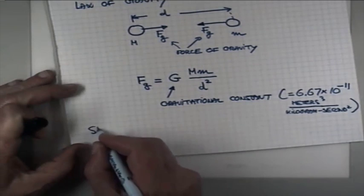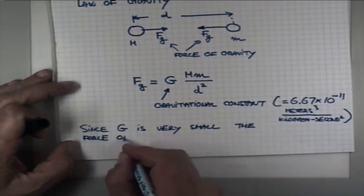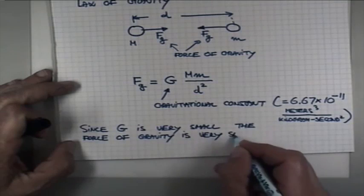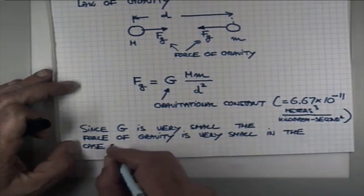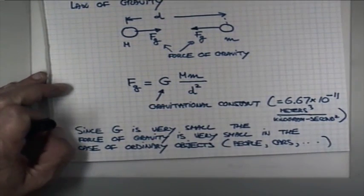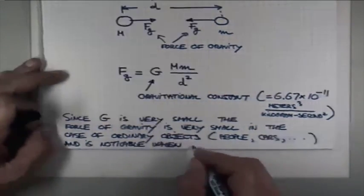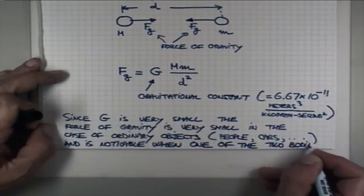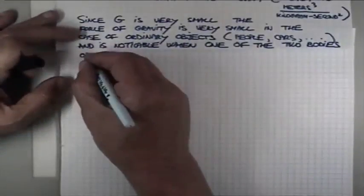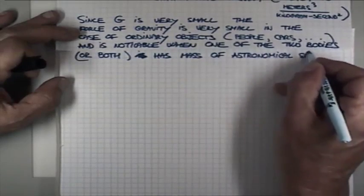So, since G is small, and it becomes noticeable when one of the two objects interacting by a force of gravity is of astronomical size, at least one, maybe both, has mass of astronomical size.